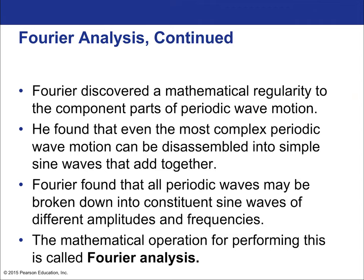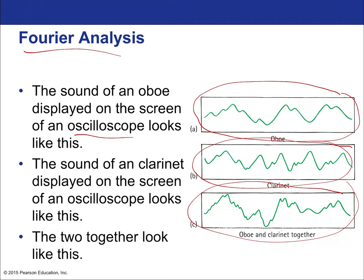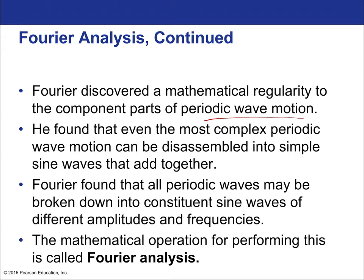Fourier discovered a mathematical regularity to the component parts of periodic wave motion. He found that even the most complex periodic wave can be disassembled into simple sine waves that add together — you can always add up sine waves to get any shape wave. Fourier found that all periodic waves may be broken down into constituent sine waves of different amplitudes and frequencies.